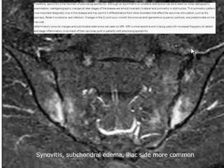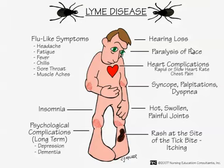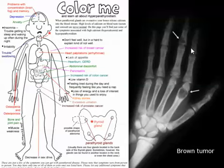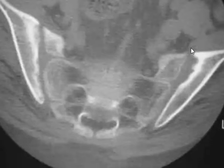Lyme disease can cause any kind of joint pain including low back pain, with flu-like symptoms. Hyperparathyroidism can cause low back pain through sacroiliitis. The symptoms are nonspecific: insomnia, irritability, not feeling well, lack of appetite, arthralgias, and muscle weakness. Patients can have a Brown's tumor — not common — and erosive changes of the sacroiliac joint. A CAT scan of one of my patients showed L4-L5 spondylolisthesis.